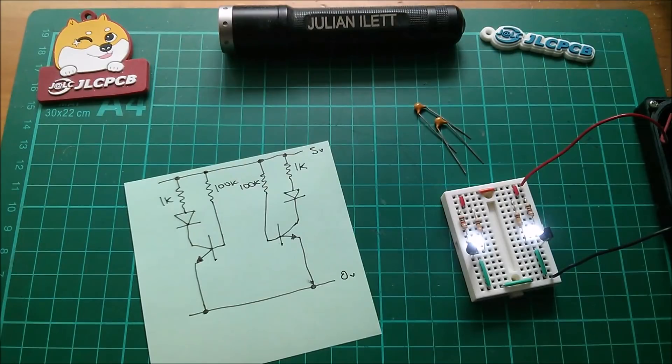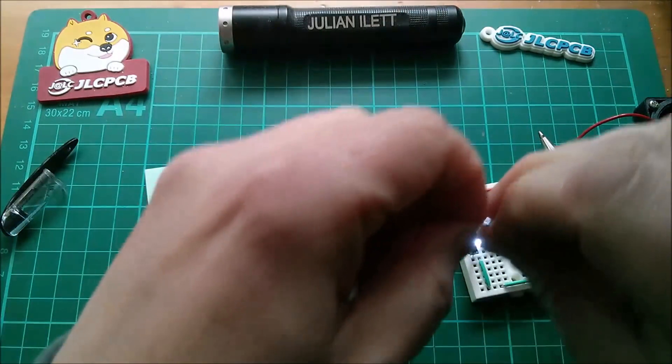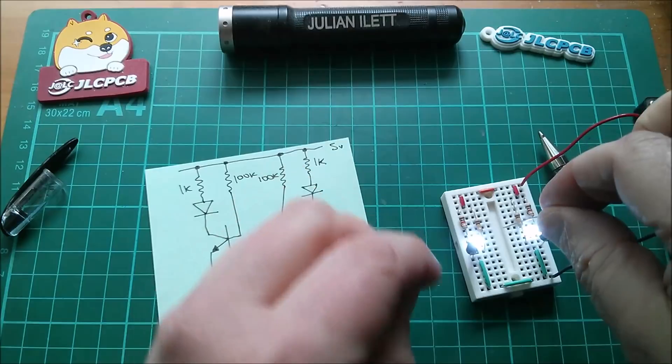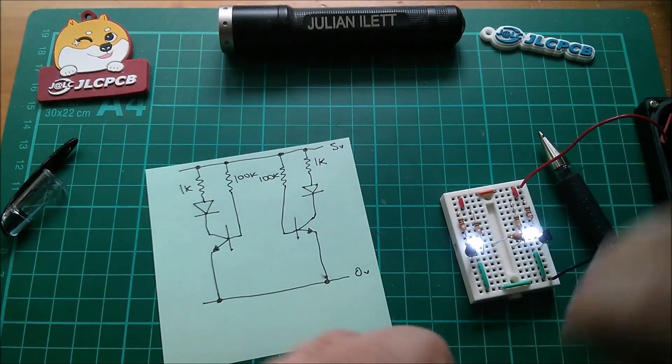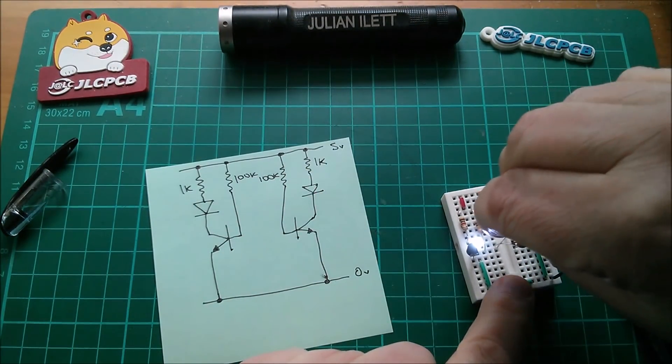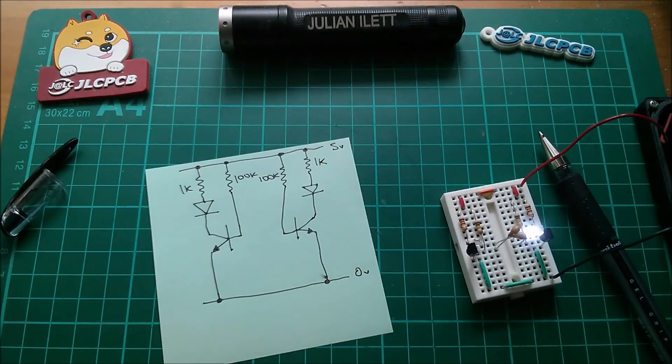Now putting the capacitors in enables the circuit to flash. So let's put them back in between base on one side and collector on the other. And vice versa. And the circuit flashes.